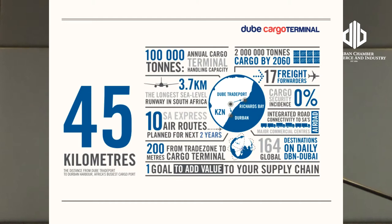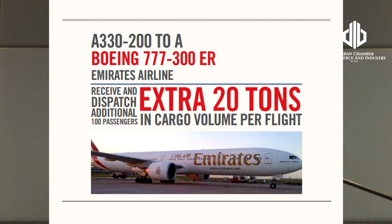Our Cargo Terminal volumes have increased by 30% year on year. We handle a whole range of products — not only perishables and automotive parts. Most recently, we partnered with Emirates, which now flies directly to King Shaka International Airport once a day using A330-200 and A777-300 aircraft, providing cargo capacity between Durban and Dubai through our Cargo Terminal.